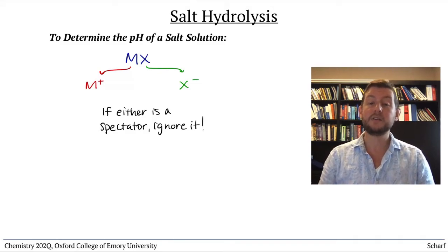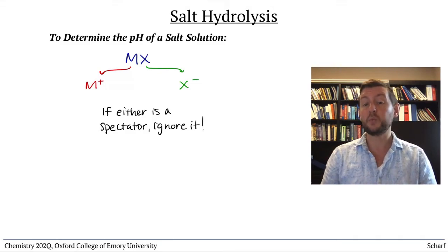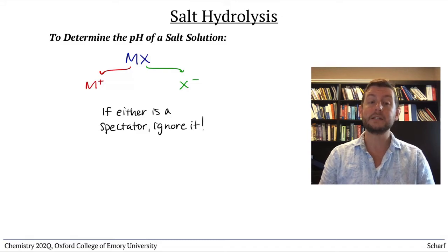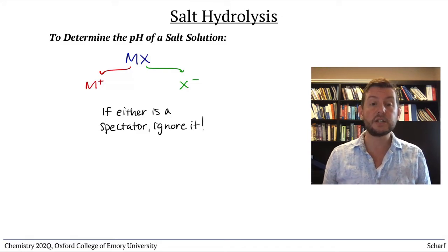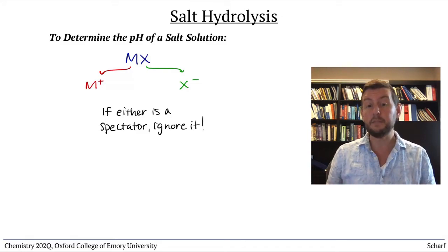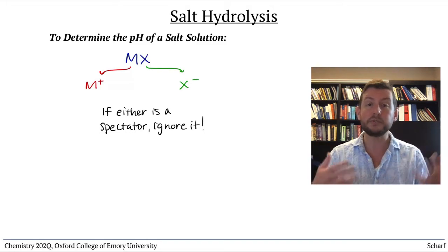If one of the ions is a spectator and the other is a weak acid or weak base, then simply treat the solution as if it's a weak acid or weak base solution, using ICE tables and so forth.